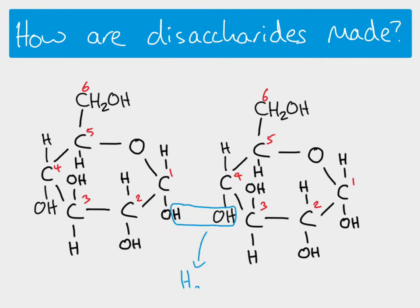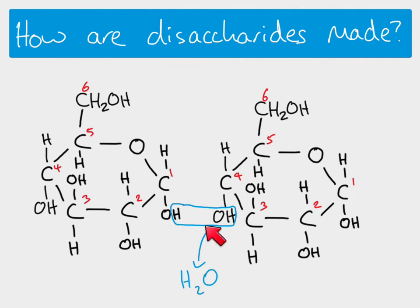The hydrogen from one hydroxyl group and the whole hydroxyl group from another carbon will be removed. You can see it comes from carbon one and carbon four. It doesn't matter whether you take the hydrogen here and the hydroxyl group there, or vice versa, but it must come from both hydroxyl groups and it has to be from carbon one and carbon four.